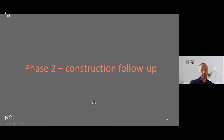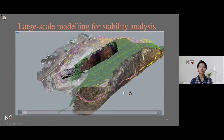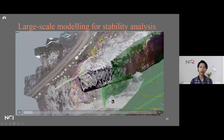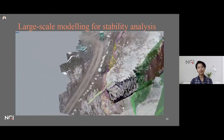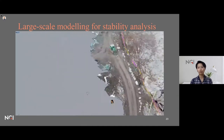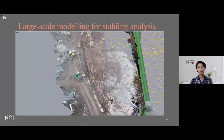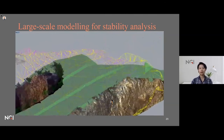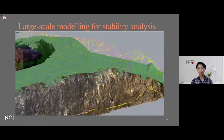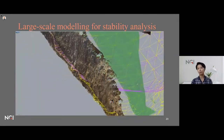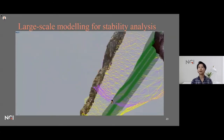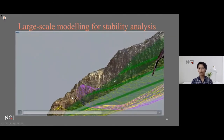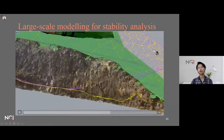In phase two we follow up how construction progresses. After they blasted the first bench, a drone scan was done again, and a very obvious sliding plane became visible on the back wall, visualized at the top of the blasted slope. Combined with the existing rock cut, we interpreted that there could be a potential sliding plane extending all the way from the front to the back, visible after the first blasting.